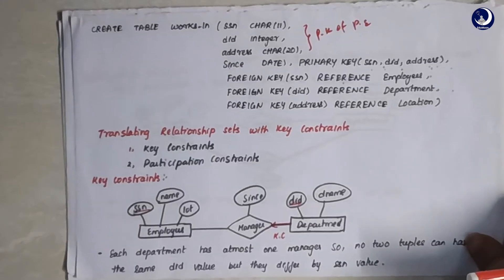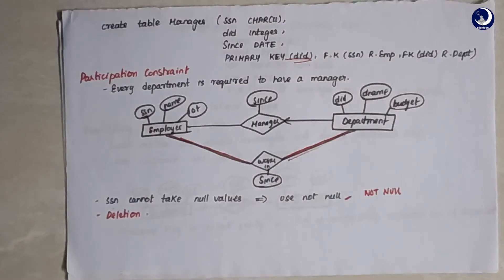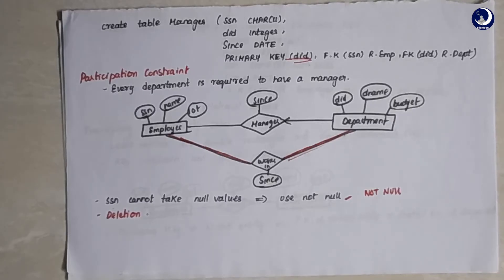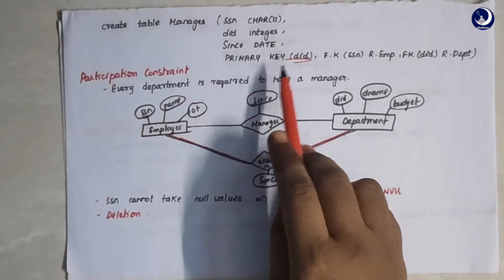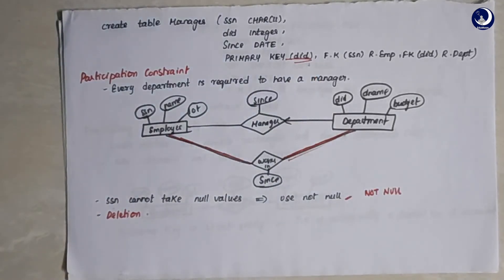Let's look at the database schema for the key constraint. The schema is similar to the one without constraints. The only difference is that here we take DID as the primary key instead of combining DID with SSN and other participating entity keys. The primary key is DID alone because it is the distinguishing factor in this relationship. This is all about the key constraint.